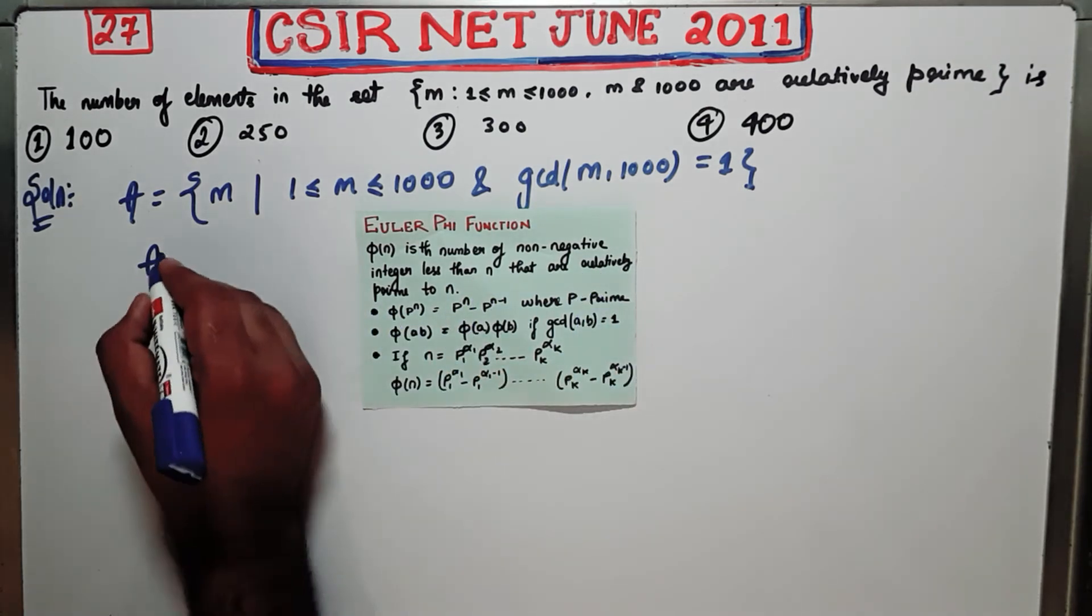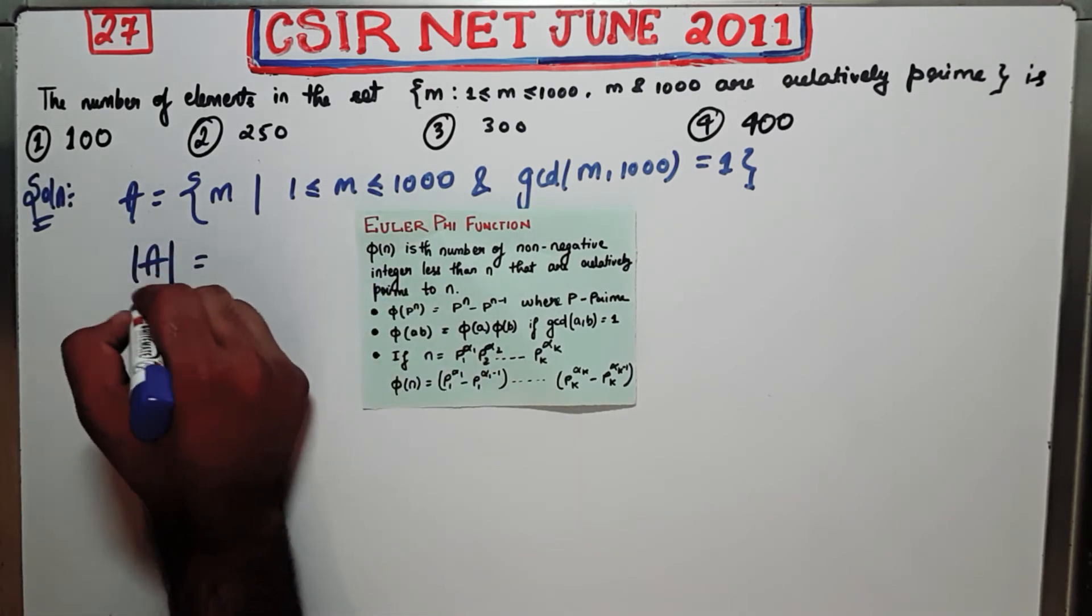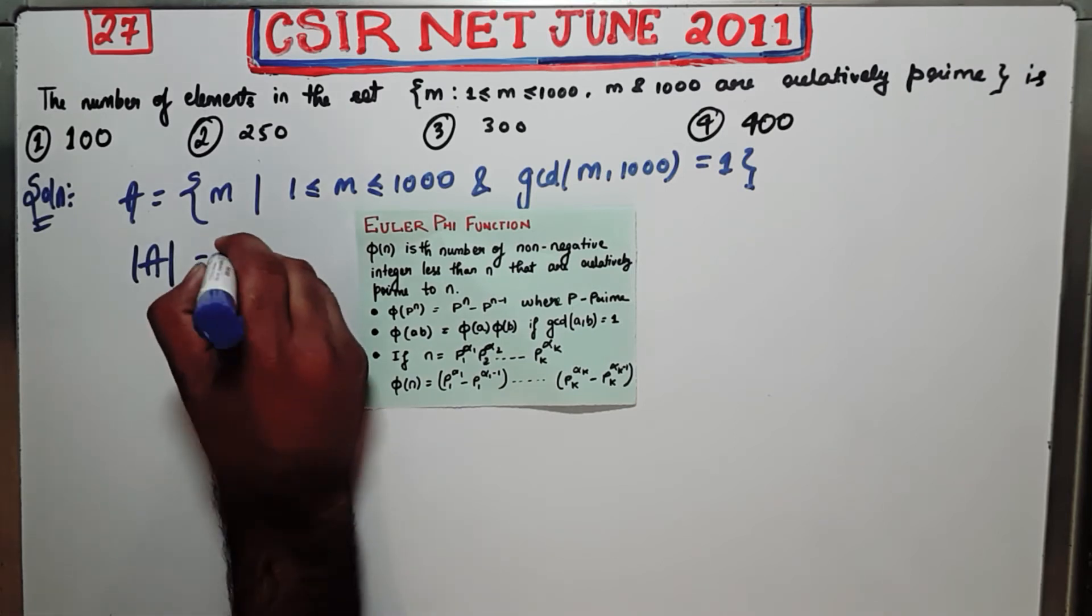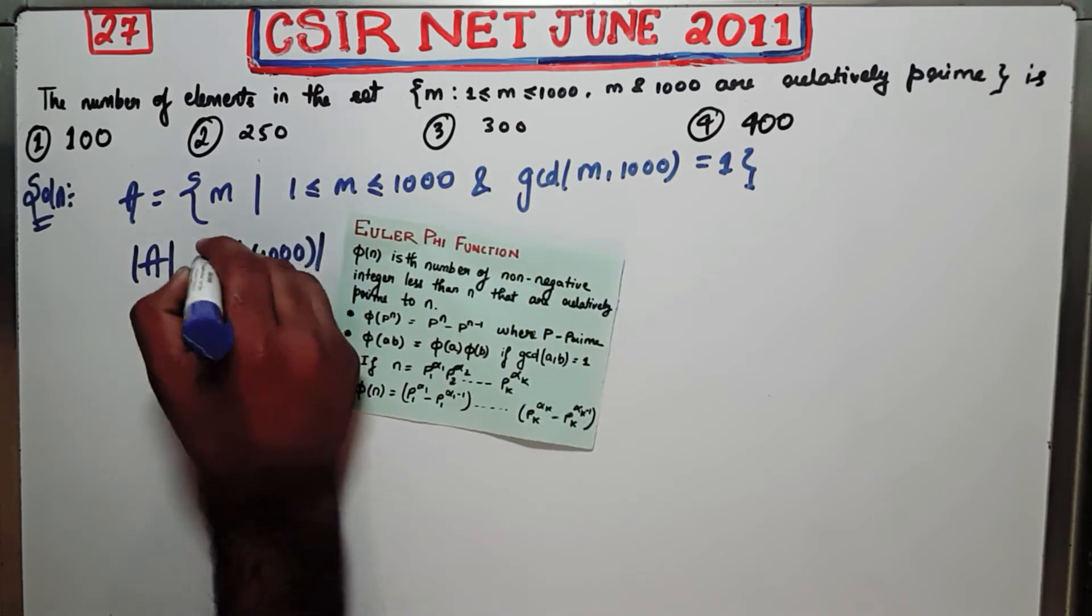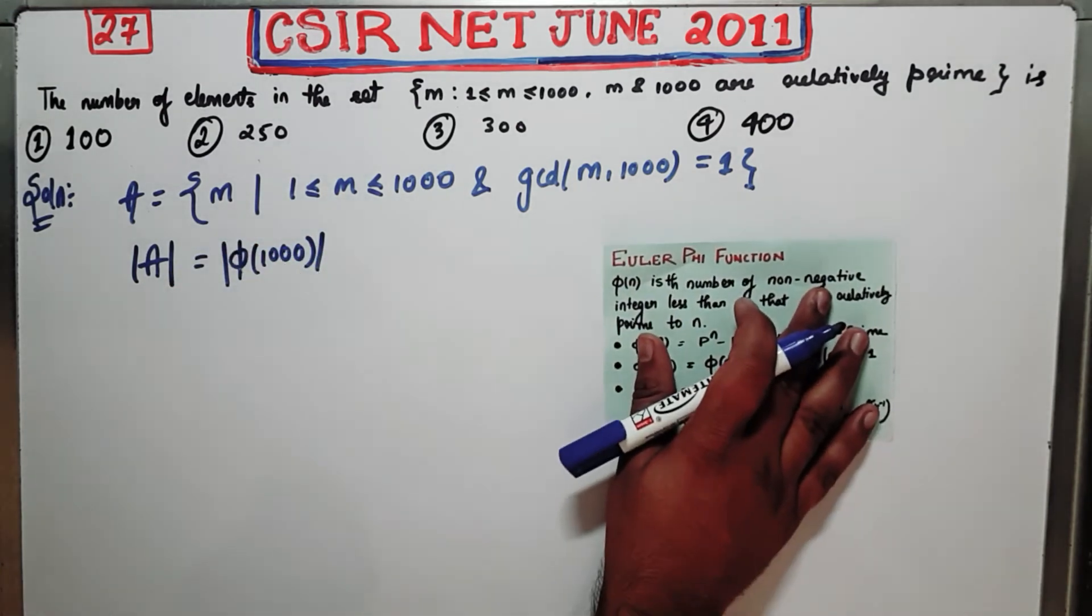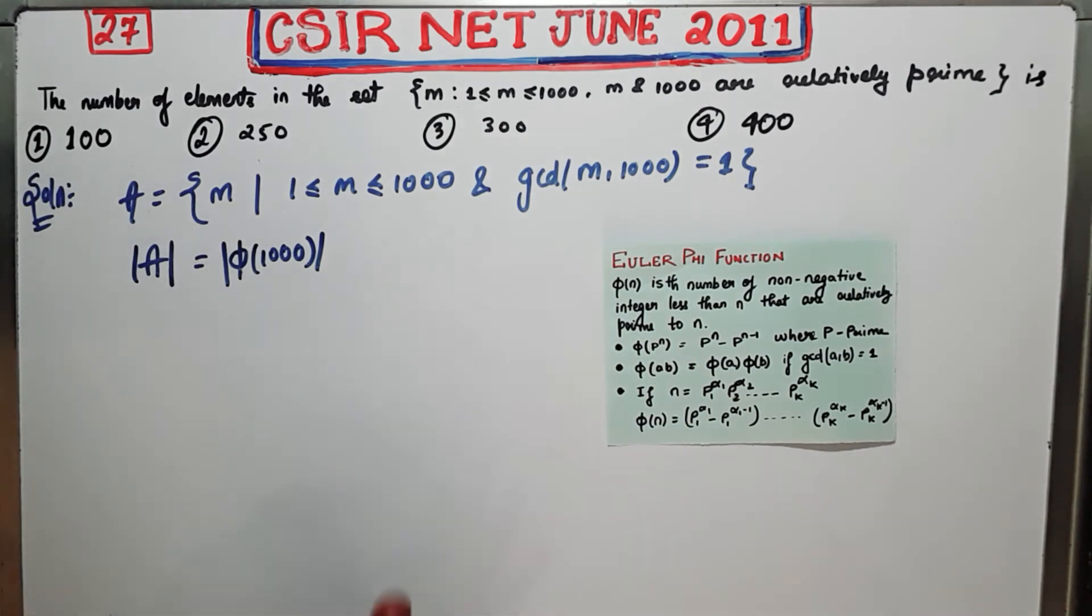So from the definition of Euler phi function I can write that cardinality of this set is actually equal to Euler phi function of 1000. This is what I can write after seeing this definition.